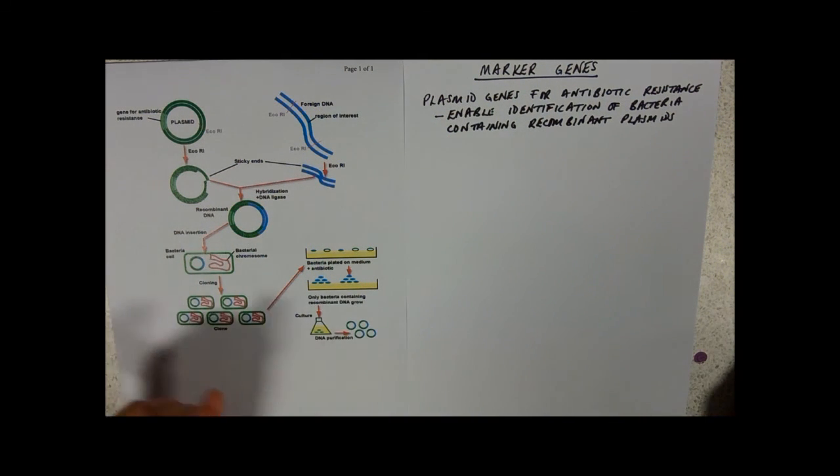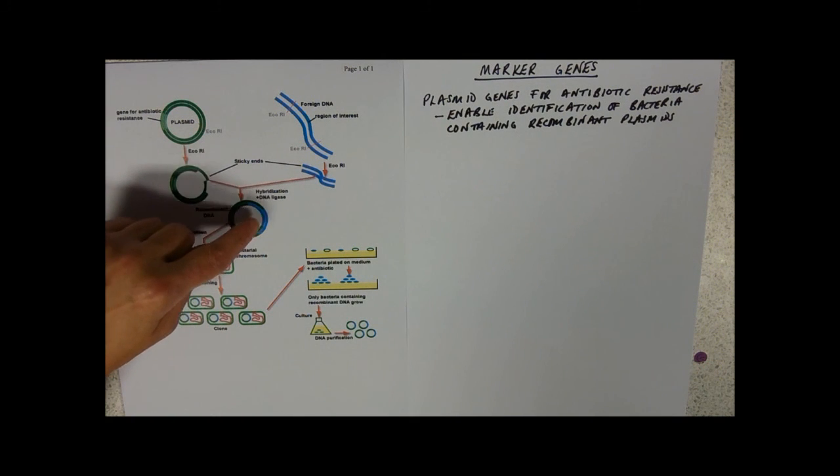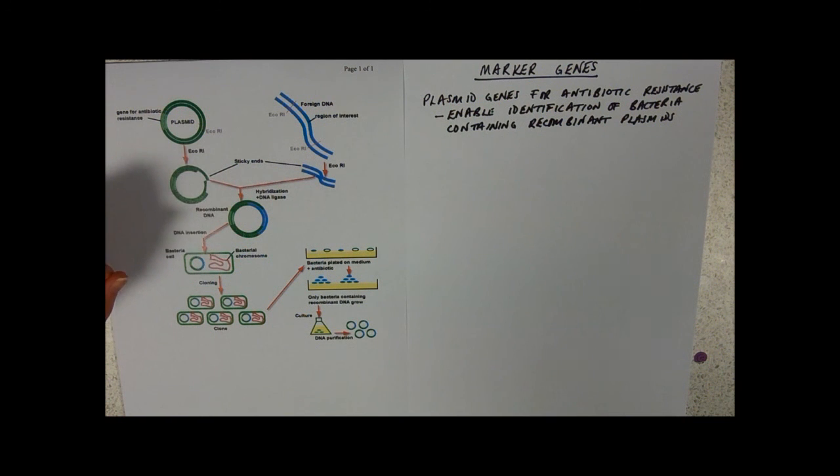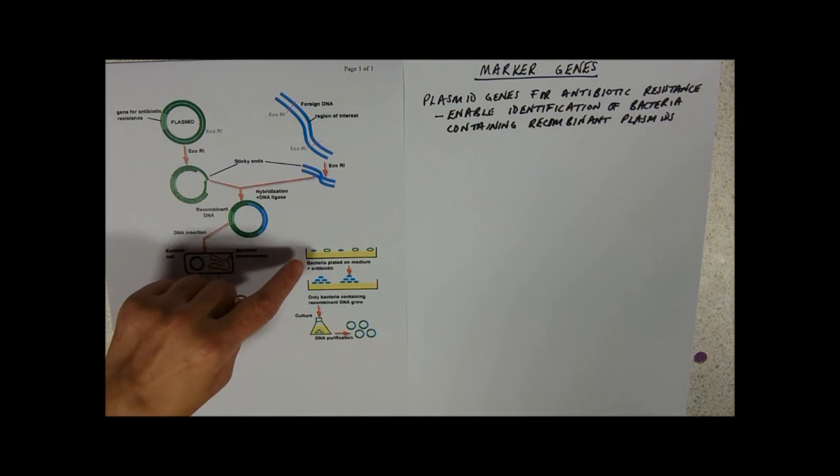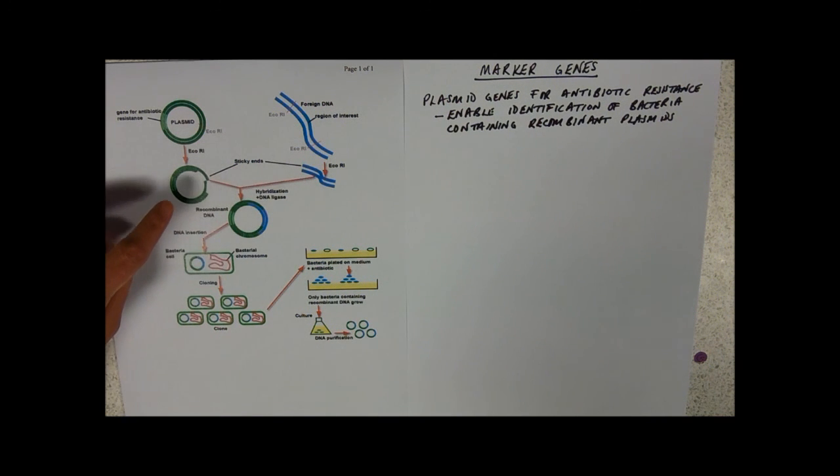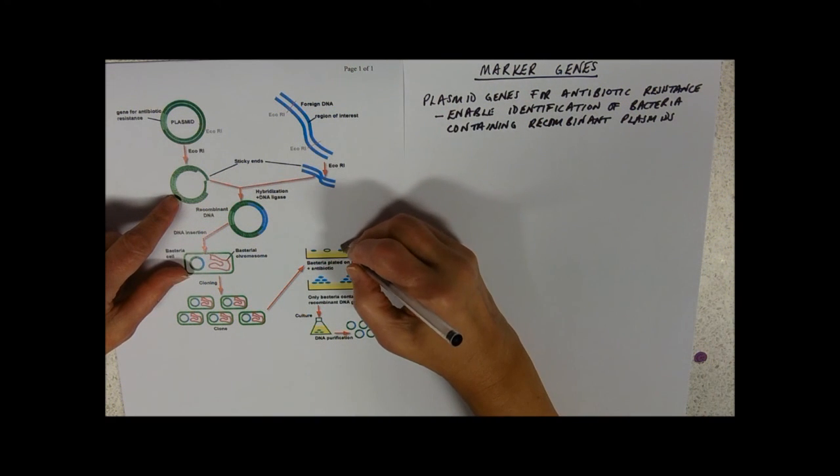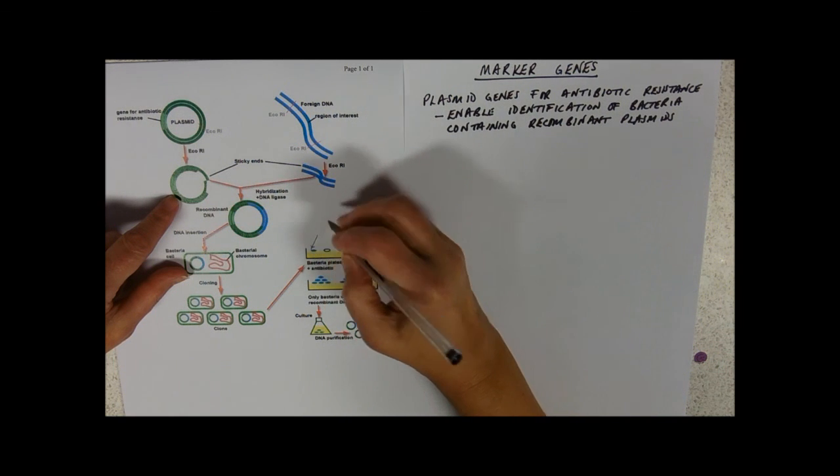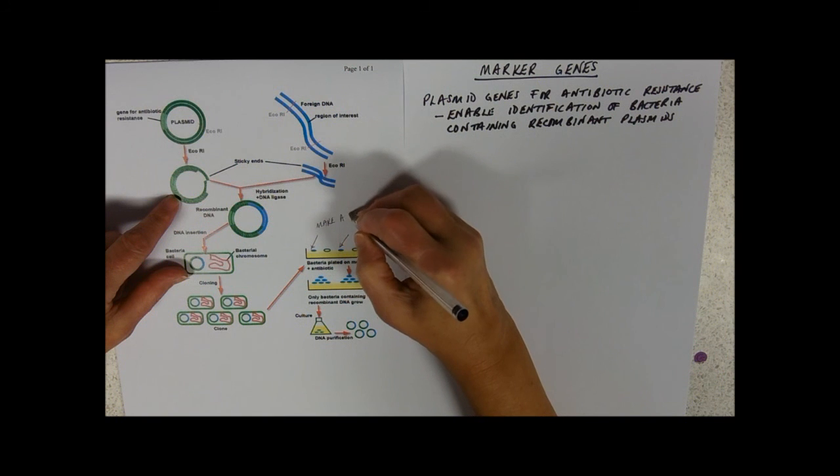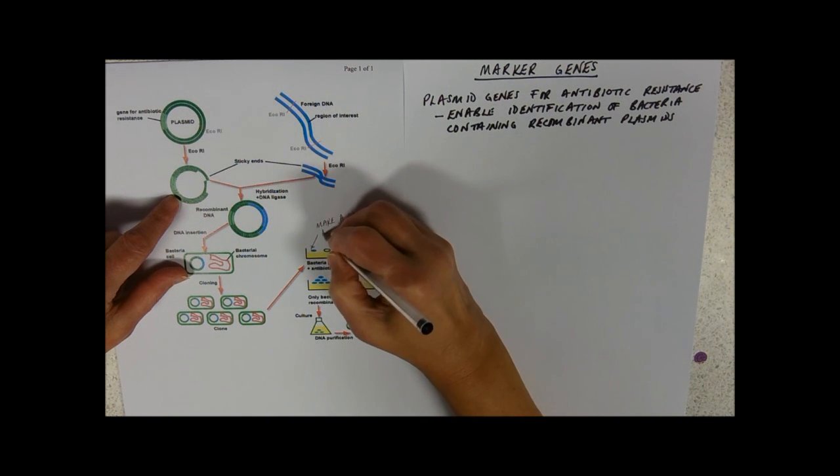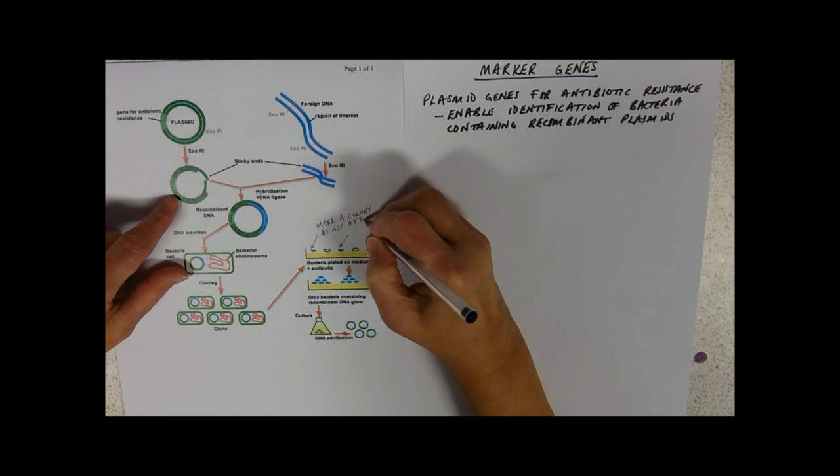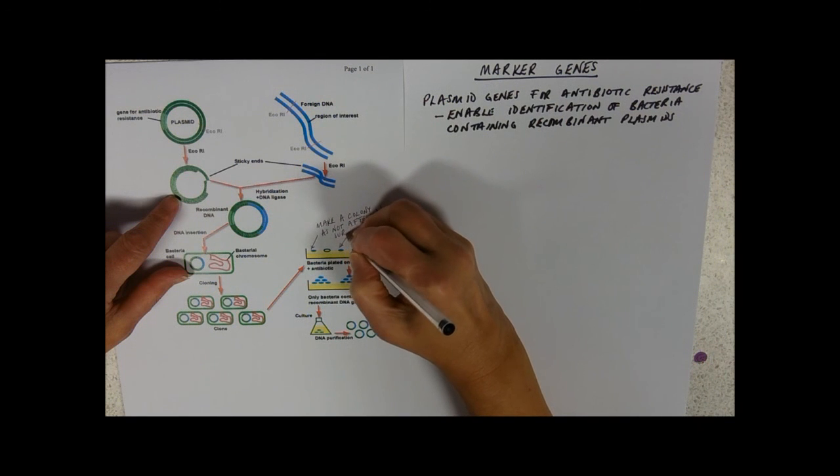Now you're only interested in the ones that have got the plasmids in because they're the ones that have got your gene for your protein that you want the bacteria to make. So if we use plasmids that have got genes for antibiotic resistance, the basic principle is that if you then grow the bacteria on a plate with antibiotic on it, then the ones that have got the resistance gene will survive and make a colony. So these are the ones with the blue gene in.